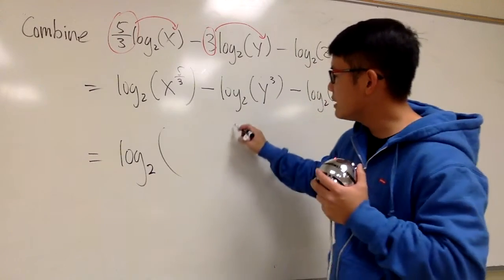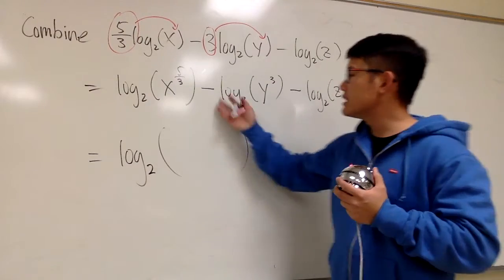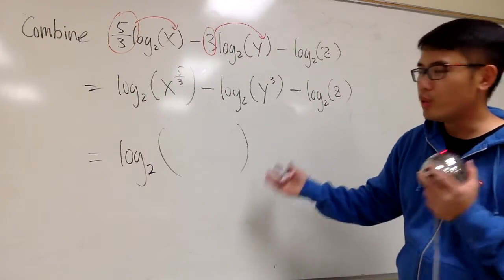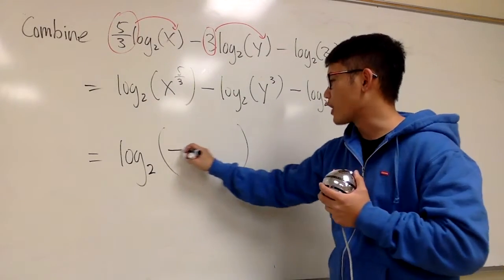And open the big parentheses. I see some positive, I see some negative, so you know we will end up with fractions. So let's get the fraction bar ready.